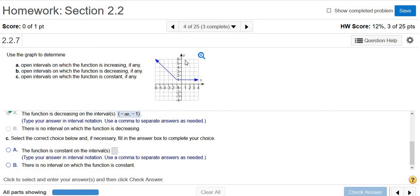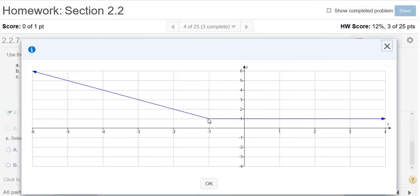The last part wants to know where the graph is constant. So the graph is constant if the y values are not changing. In other words, it's the same y value throughout an interval. So from negative 1 to infinity, the function is always equal to 1. So from negative 1 to infinity, the function is constant. It's not changing. It's not increasing or decreasing.